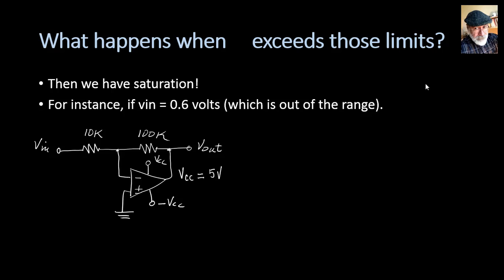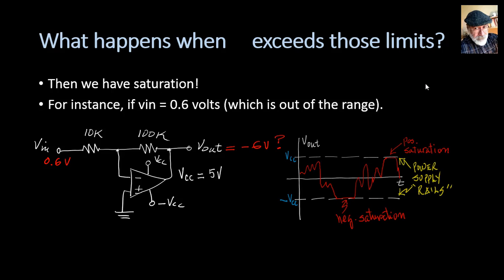In that case, the output would try to reach for negative 6 volts, which is negative 10 times the input, which is below the lower rail. And the output would get stuck, we hope, at the lower rail value, probably.